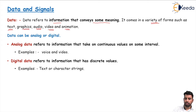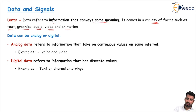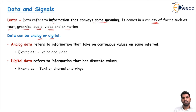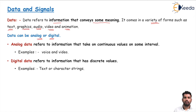Data can be of analog or digital types. When we represent data in a time series — looking at how data is generated over time — we divide data into two forms: analog type or digital type.